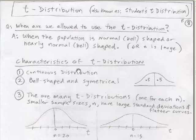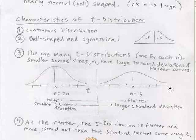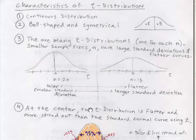Characteristics of the t-distribution: it's a continuous distribution, bell-shaped and symmetrical. There are many, one for each n. The smaller the sample size n, the larger the standard deviation and the flatter the curve. For example, n=15 and n=20, n=15 is flatter and more spread out with larger standard deviation. So oftentimes, it is not that much more difficult to get a larger sample size.